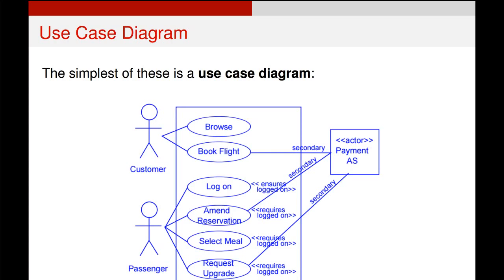Here's an example use case diagram — this is what a diagrammatic version might look like. On the left hand side we can see a customer and a passenger; these are examples of actors, people that might use the system. On the right hand side we can see a payment authentication system — also an actor, not a human actor, but another system our system must interact with. In the center we can see a whole bunch of ovals like browse, book flight, log on, amend reservation, select meal, and so on. These are our individual use cases — what these individual actors would use the system for.